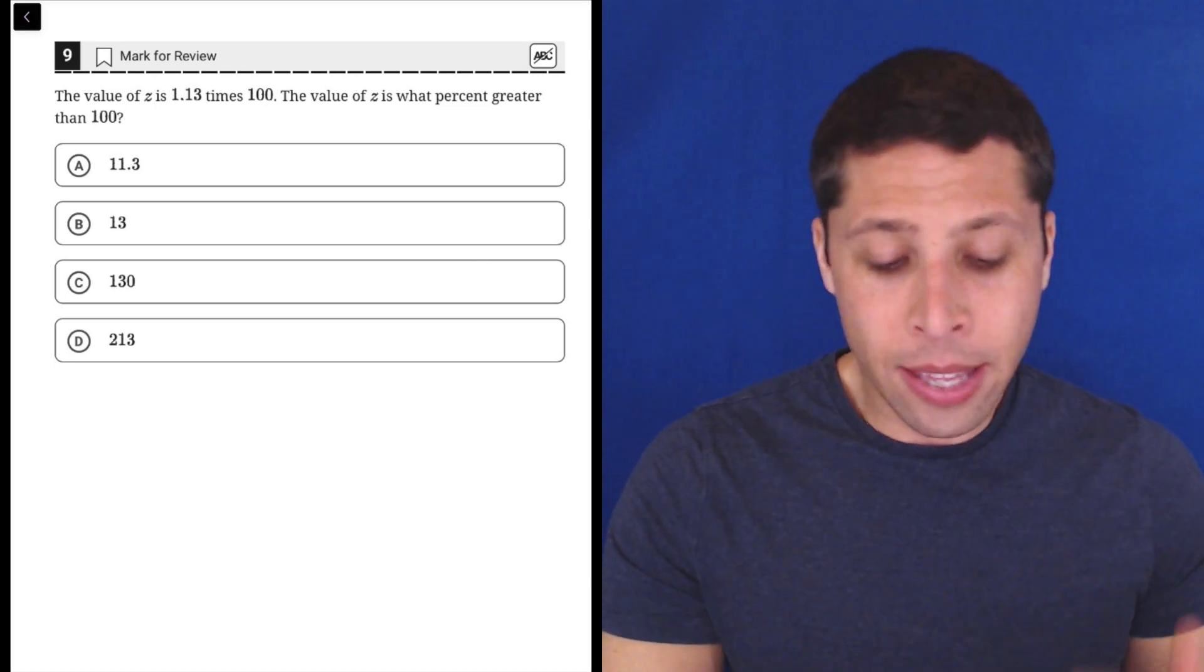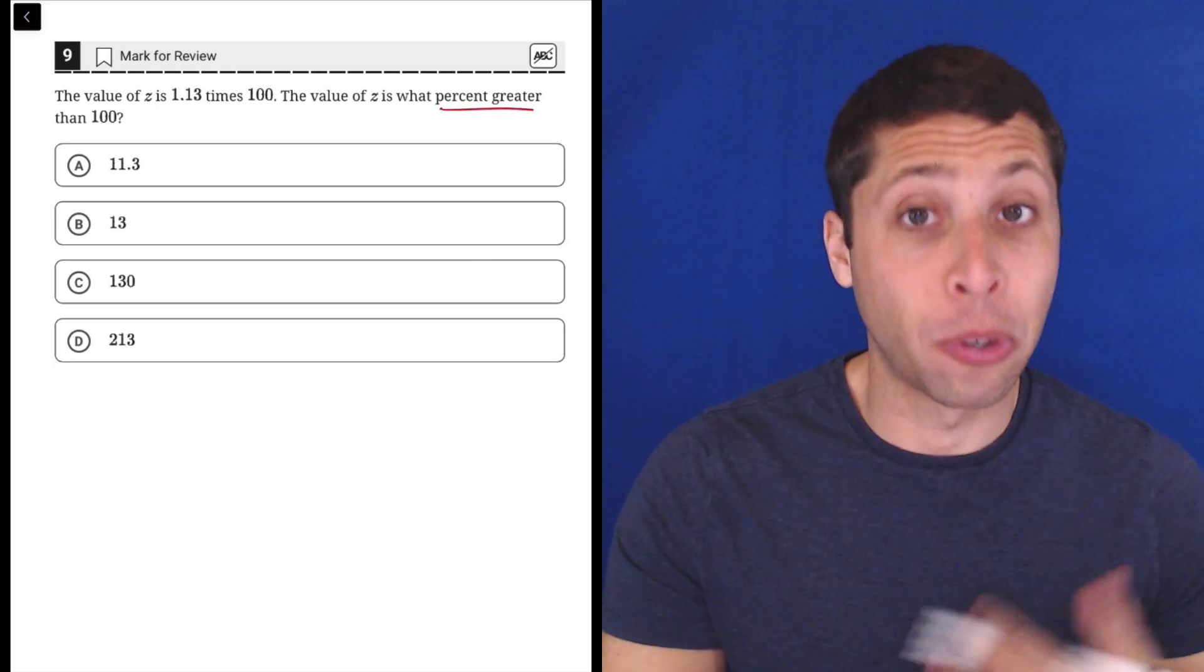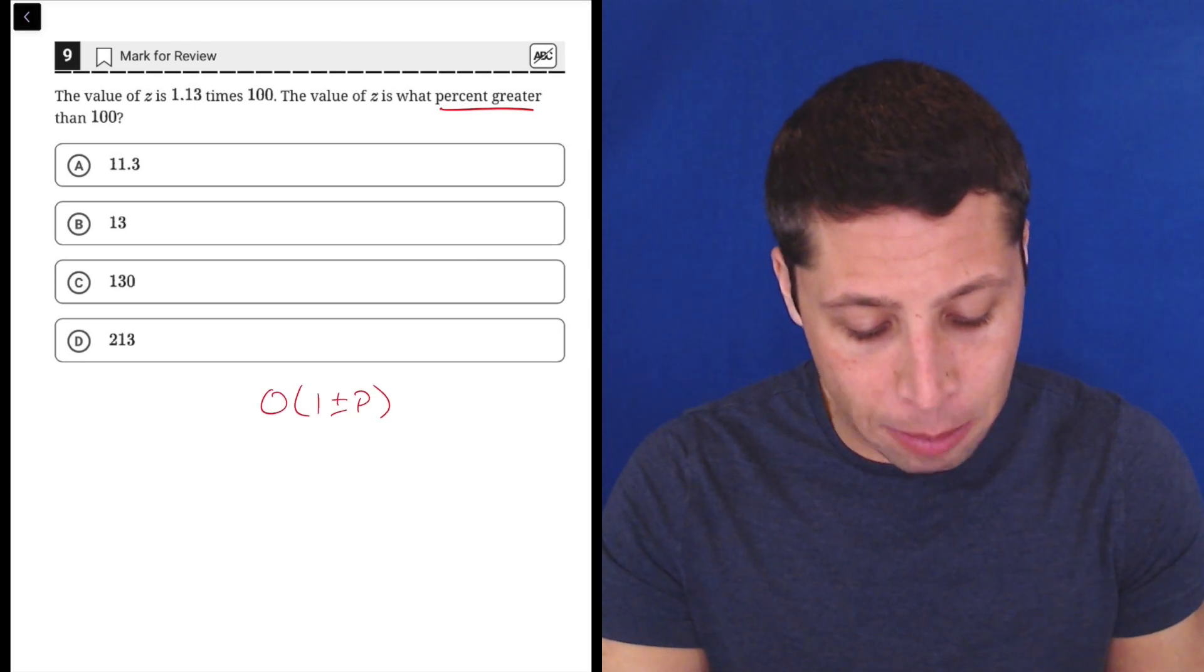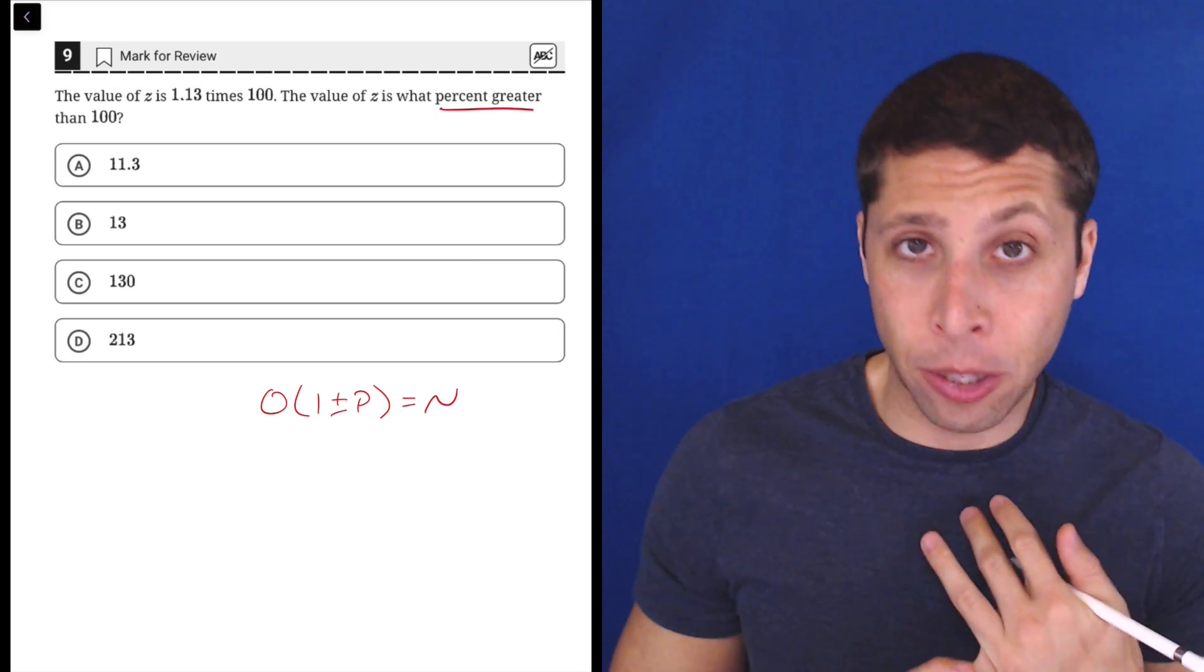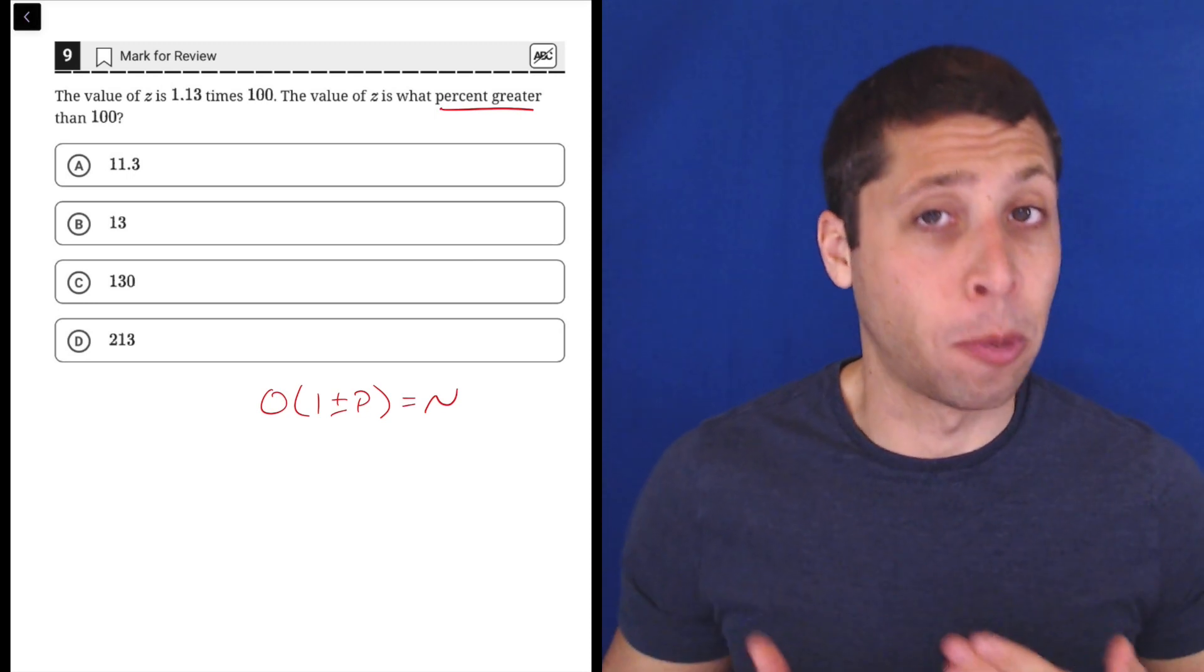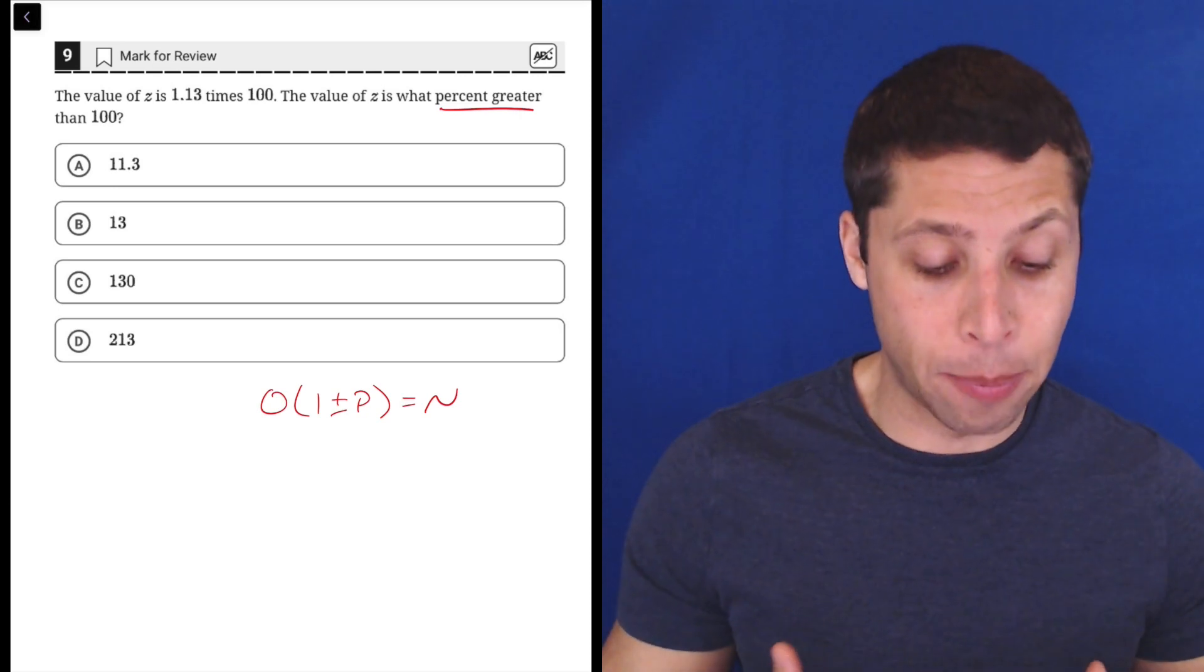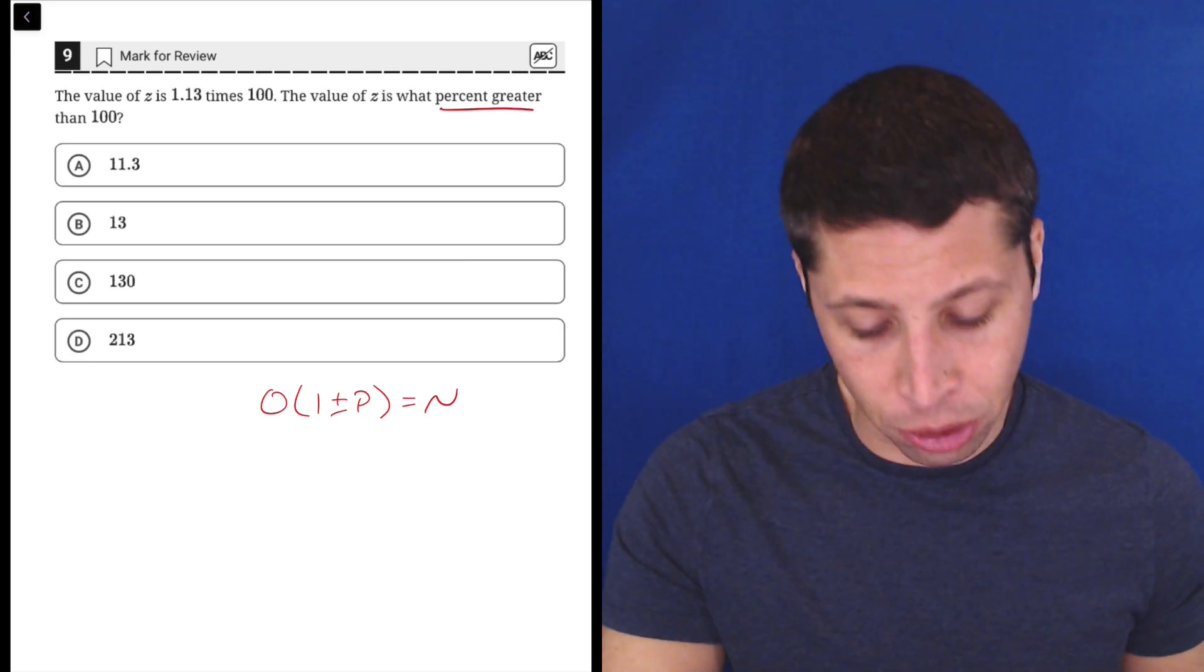Now in this case, because it's talking about a percent change, percent greater, we're going to use the version of the open formula that involves the 1 plus or minus P. So the O still stands for the original value, the P stands for the percentage, the N stands for the new value, but the 1 plus or minus helps us with the fact that it's a percent greater that we're interested in.